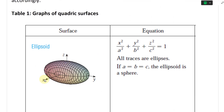First we have the ellipsoid, with equation x²/a² + y²/b² + z²/c² = 1. All traces are ellipses — notice the ellipses on each axis and going across horizontally as well. If a equals b equals c, the ellipsoid becomes a sphere.